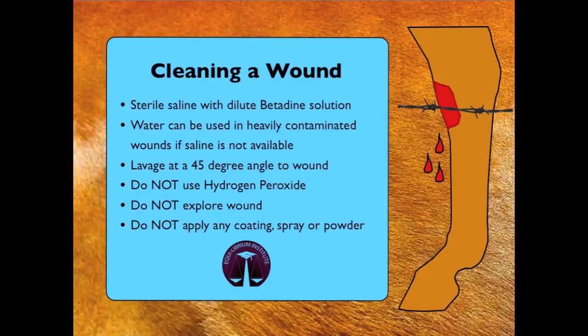When cleaning a wound, it is important to try and rinse the debris away and not deeper into the wound. To achieve this, the wound should be irrigated at a 45 degree angle. Never use hydrogen peroxide to clean a wound, and never explore a dirty wound until it is completely cleaned, as you could risk pushing bacteria deeper into the tissue.